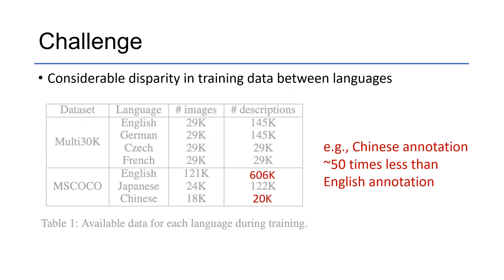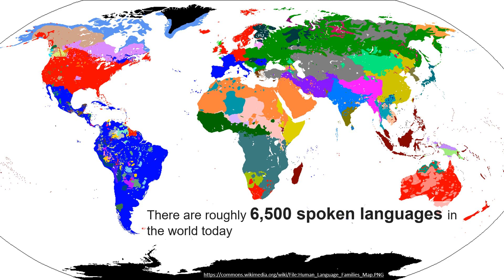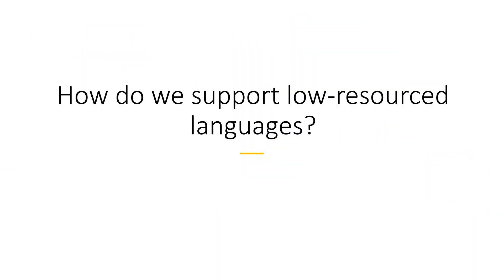One challenge in scaling such models to multiple languages is that there's a considerable disparity in training data between languages. For example, in MS Coco, the amount of Chinese annotation is roughly 50 times less than English annotation — where by annotation I mean images paired with caption descriptions. Most existing vision language models can handle one language, namely English, maybe several languages. But when we consider that there are roughly 6,500 spoken languages in the world today, we would like to extend these models to handle many more languages. The question is: how do we support low-resource languages in vision language models without requiring a lot of annotated data for each language?